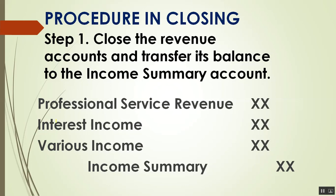Step 1: Close the revenue account and transfer its balance to the income summary account. The normal balance of revenue is credit, so to zero it out you debit it. The journal entry is: debit Service Revenue (or whatever revenue account), and credit Income Summary.